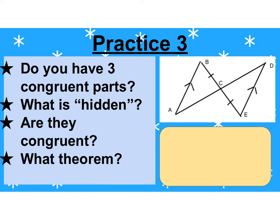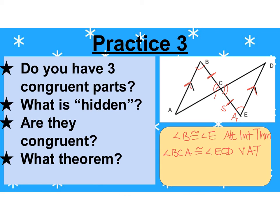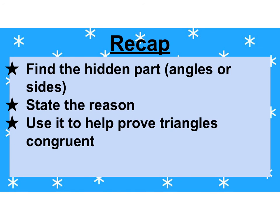Our last practice: I've got some marks — sides congruent and parallel lines. We know that parallel lines hide congruent alternate interior angles. So angle B is congruent to angle E by the alternate interior angle theorem. And those two middle angles — using three letters — angle BCA is congruent to angle ECD by the vertical angle theorem. So I have an angle, a side, and an angle. Triangle ABC is congruent to triangle DEC by angle-side-angle. They're not always going to be angle-side-angle; that's just a coincidence here. Find the hidden part — whether angles or sides — state the reason, and use it to prove two triangles congruent. Nice work.